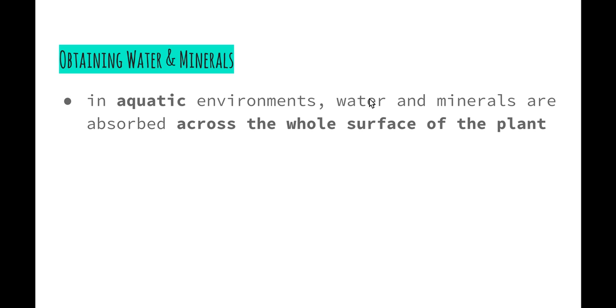First, we'll look at how plants obtain water and minerals necessary for them to survive. In aquatic environments, water and minerals are absorbed across the whole surface of the plant because they're constantly in contact with water. Plants that live in water usually have a very large surface area to absorb water straight across the surface of the leaves.